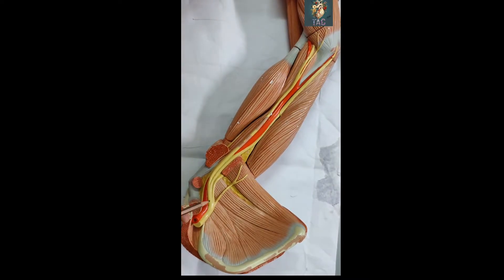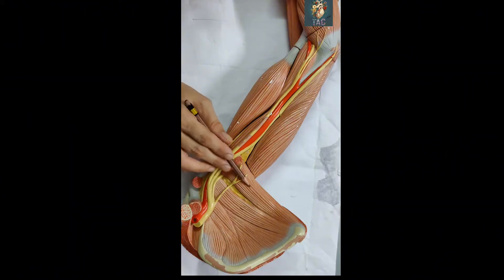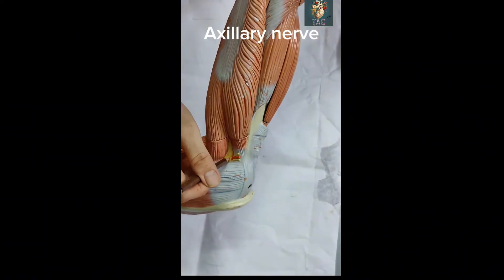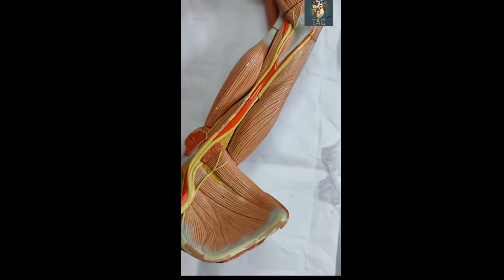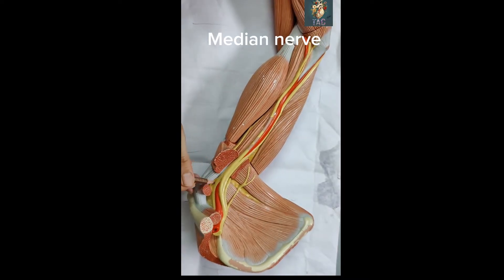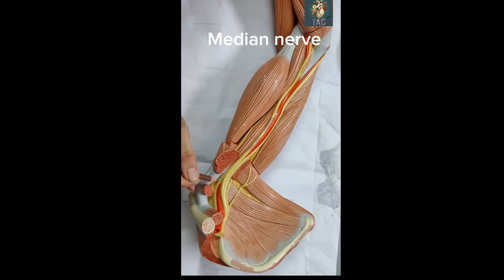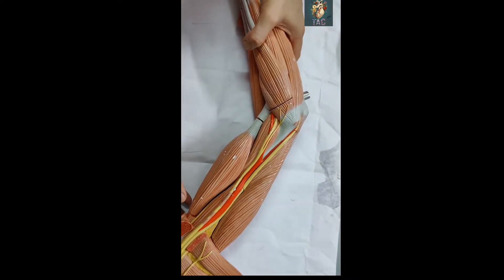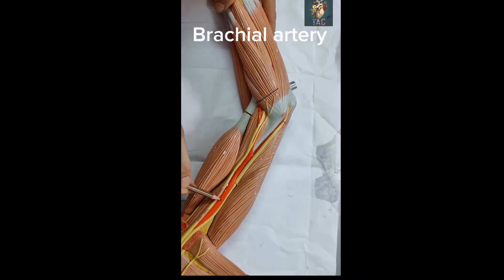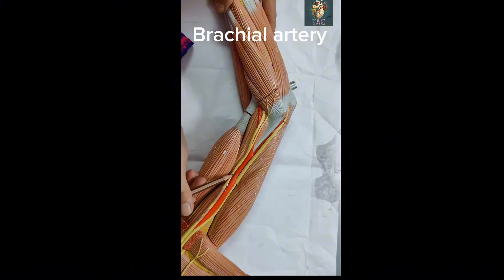The different branches visible in this model include the lower subscapular nerve, which reaches up to the teres major muscle. Then you can see the axillary nerve, which exits through the quadrangular space. From the medial cord you can see the ulnar nerve, and this one is the median nerve with its medial and lateral origins from the respective cords.